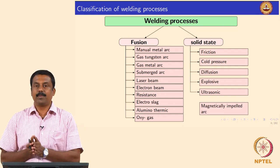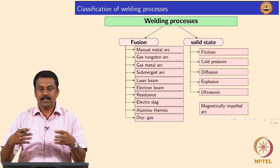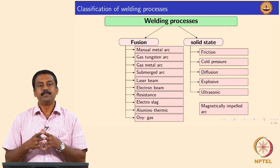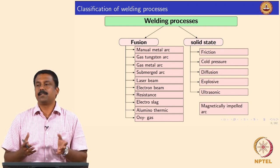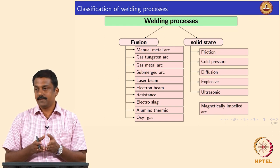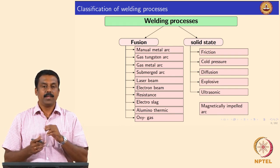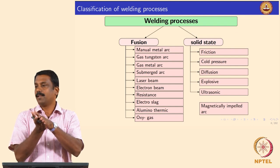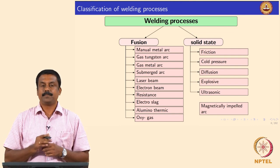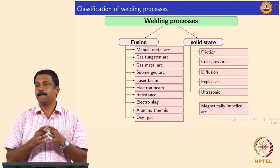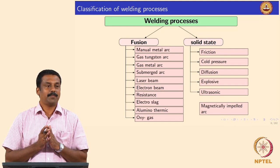In solid-state welding, there is no real melting of the interface - only the solid, unmolten regions coalesce. Examples include friction welding variants: simple rotary friction welding where two rods are rotated against each other to generate heat, linear friction welding, friction stir welding where a rotating rod is moved along the interface, and cold pressure welding where simple pressure is applied.